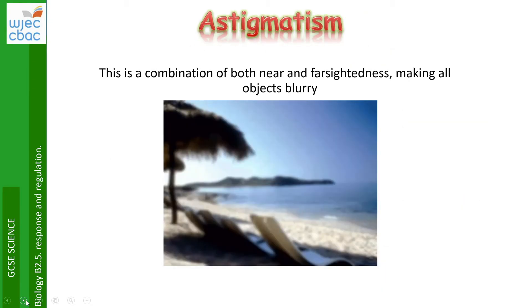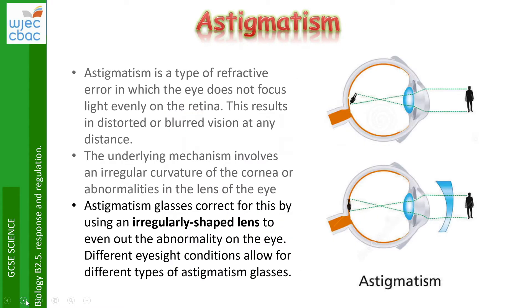We also have astigmatism. This is a combination of both near and far-sightedness, making all objects blurry both near and far. Astigmatism is a type of refractive error in which the eye does not focus light evenly on the retina, resulting in distorted or blurred vision at any distance.